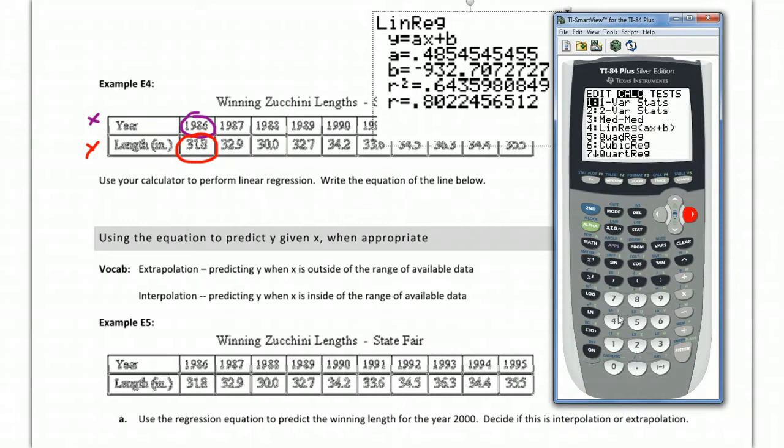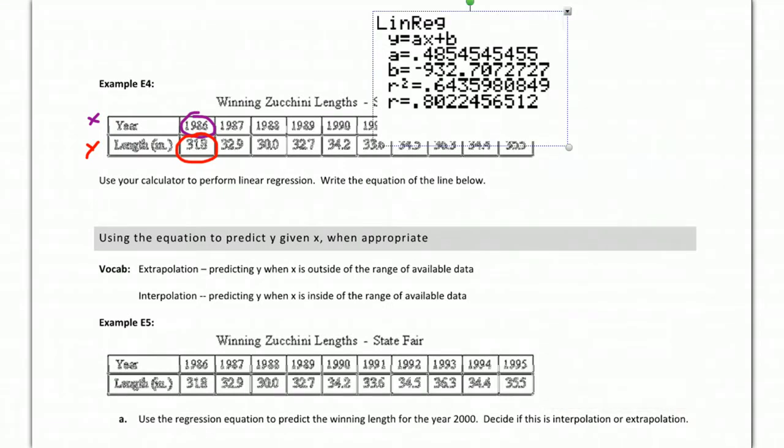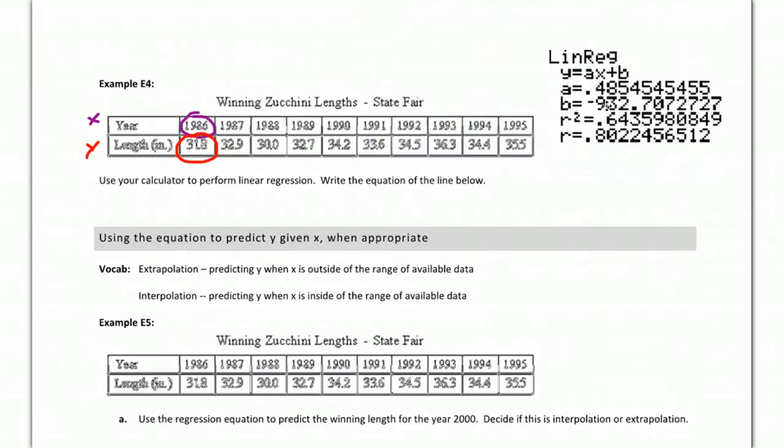So now when you go back and do your stat calc, fourth one down, lin reg, enter, that'll show all four values. So if you had that problem before, that should fix it.